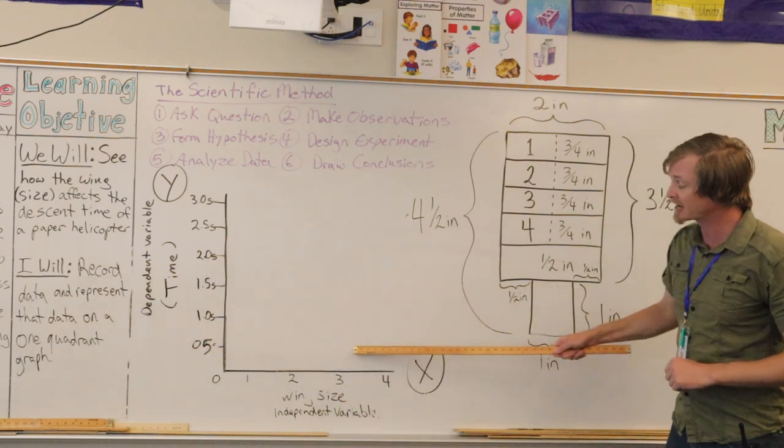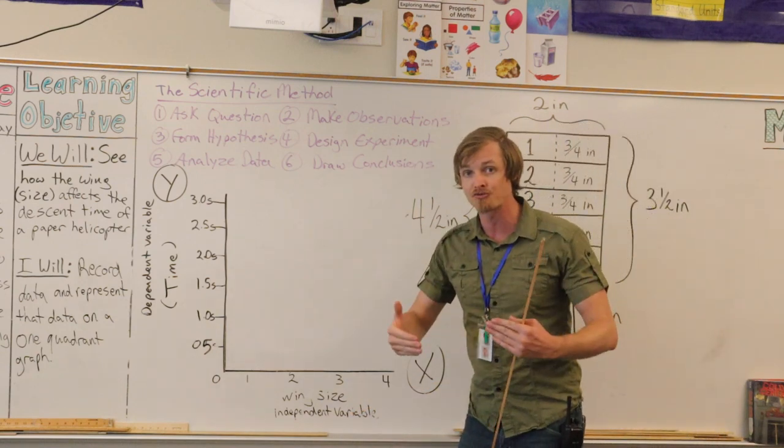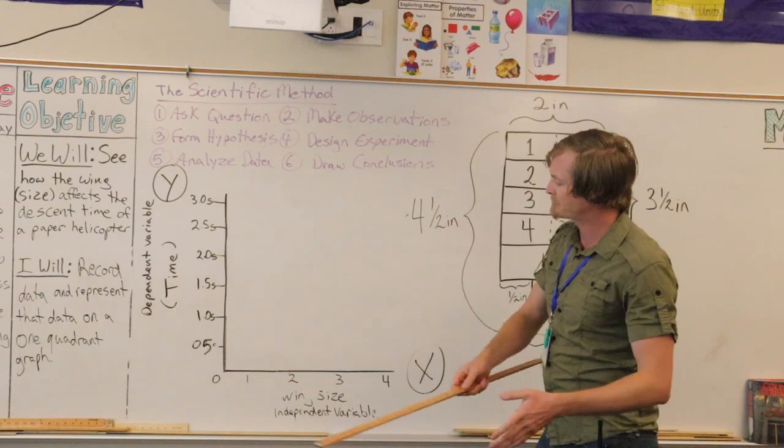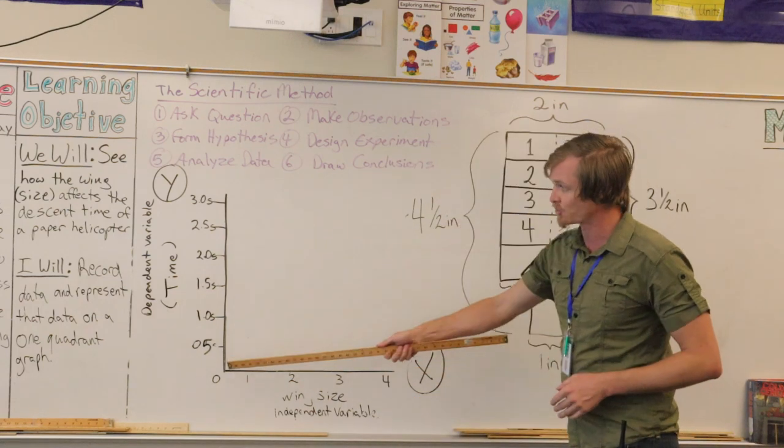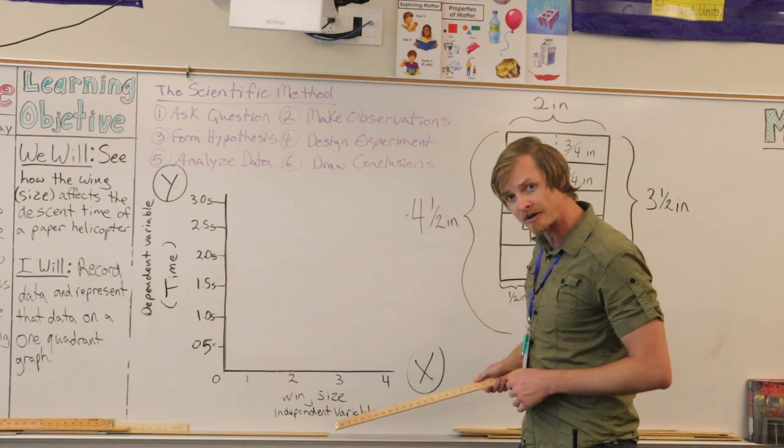Then the students will record data and represent that data on a one quadrant graph. This is my graph here. Once we have collected all of our data we are going to represent our average descent times on our one quadrant graph. I'll talk about what the x-axis is, what the y-axis is, what a dependent variable and an independent variable is.